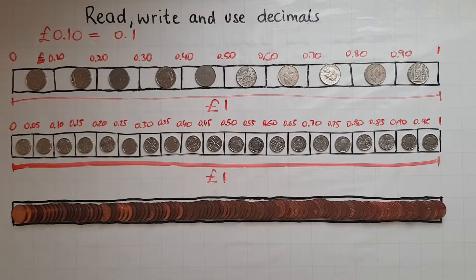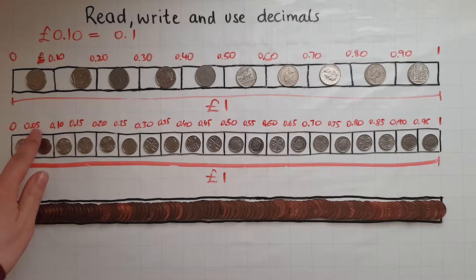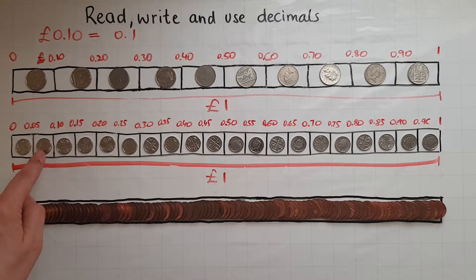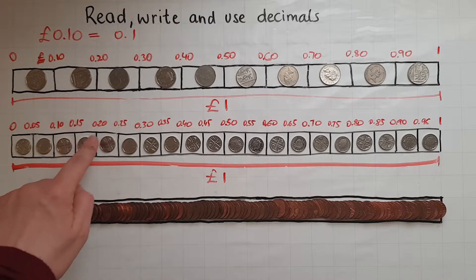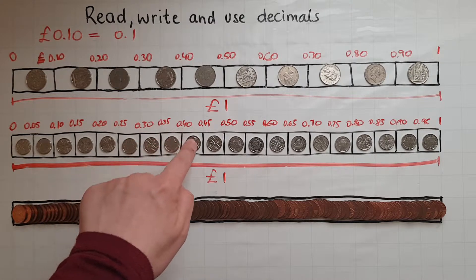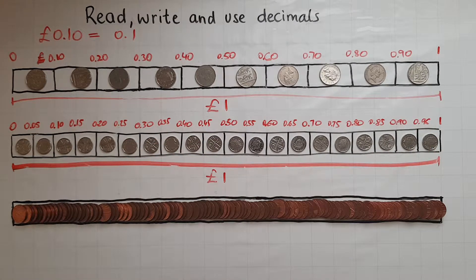So if you look at these after the decimal point — which separates pounds from the pence — you've got 0.05 which is five pence. You've got 10 in there which was 10p, 15, 20, 25, 30, 35, 40, 45, up to 100, which makes one pound.